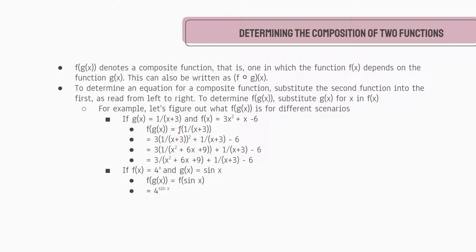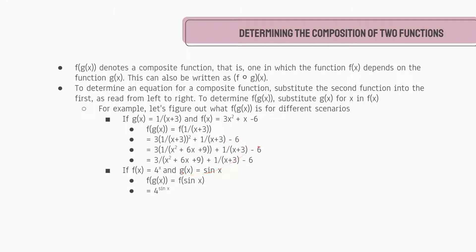So we're writing down what the composite function is, and instead of writing g(x), we're actually writing its equation. We get f(1/(x+3)). This notation means that everything within this bracket must be substituted for the x value. So we take this equation and every x we had becomes 1/(x+3). So we get 3 times (1/(x+3))² plus 1/(x+3) minus 6.